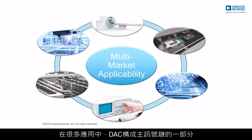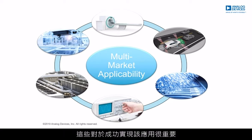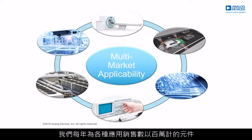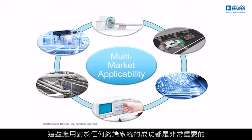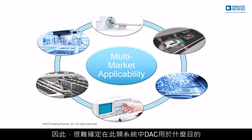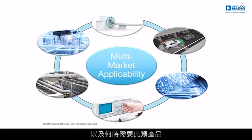Within many of these applications, where the DAC forms part of the main signal chain, we know the exact function it performs and the key specifications which are important for success in that application. However, the DAC market is very extensive, and we sell millions of devices every year into applications where the DAC is not used in the main signal chain, but forms part of the supporting circuitry, which performs peripheral functions like providing control signals, level setting, or calibration functions. These applications are critical to the success of any end system, but they are often not the main focus of the system designer. Hence, it can be difficult to identify what the DAC is used for in such systems and when such a product is required.